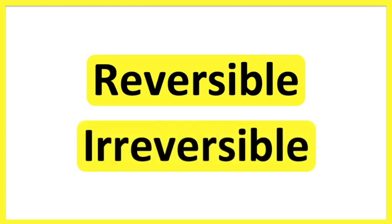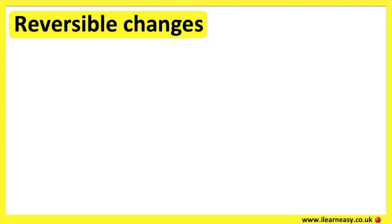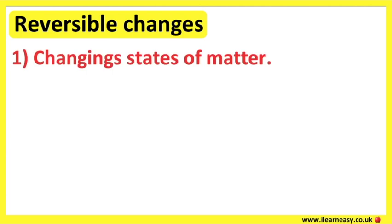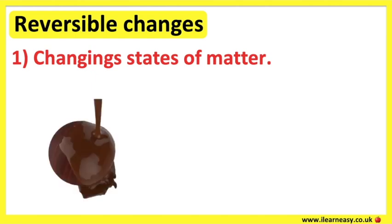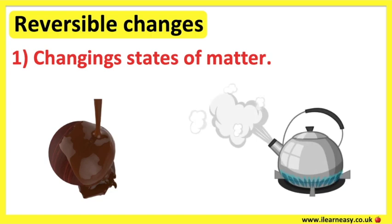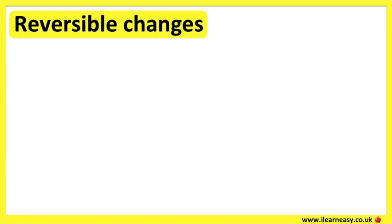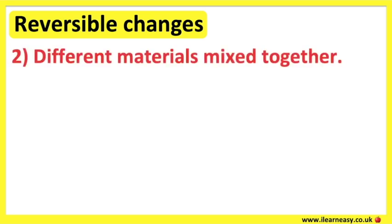Reversible changes means that any changes made can be reversed. Changing states of matter are always reversible. For example, chocolate melts when it's warm and it sets hard when it's cold. Boiling water evaporates as steam and then it condenses back as water. So even when the state of matter is changed, it can still be changed back to its original. When different materials are mixed together, they can usually be separated again.